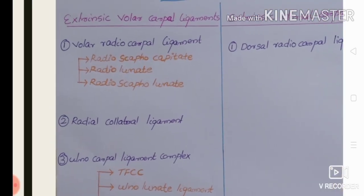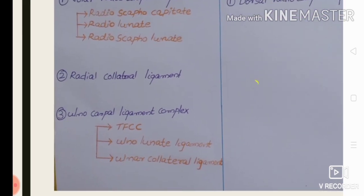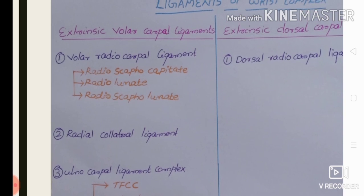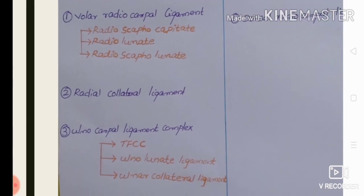First we will discuss the extrinsic volar carpal ligaments. These include the volar radiocarpal ligament, the radial collateral ligament, and the ulnocarpal ligament complex. The volar radiocarpal ligament includes three bands: the radioscaphocapitate ligament, the radiolunate ligament, and the radioscapholunate ligament. The ulnocarpal ligament complex includes the triangular fibrocartilage complex, the ulnolunate ligament, and the ulnar collateral ligament.